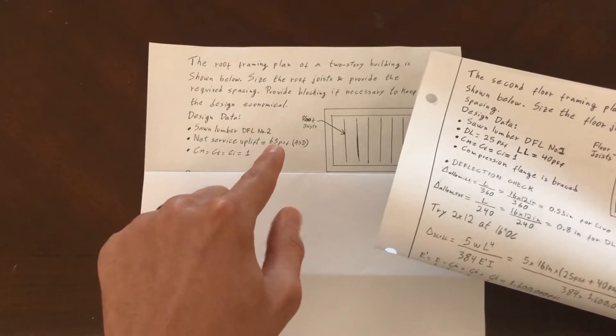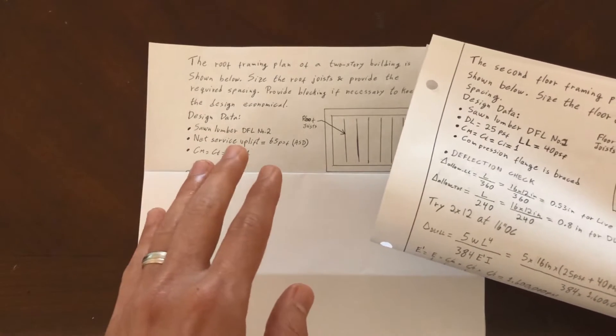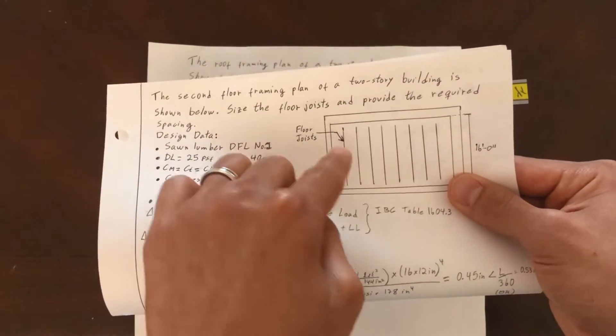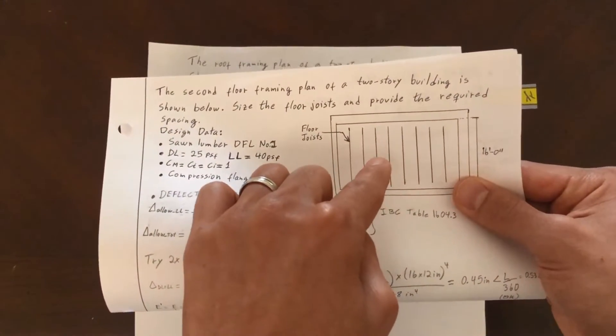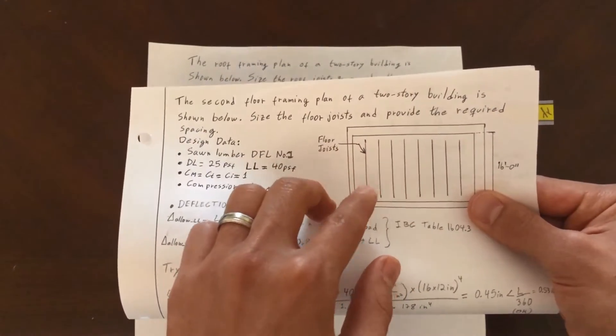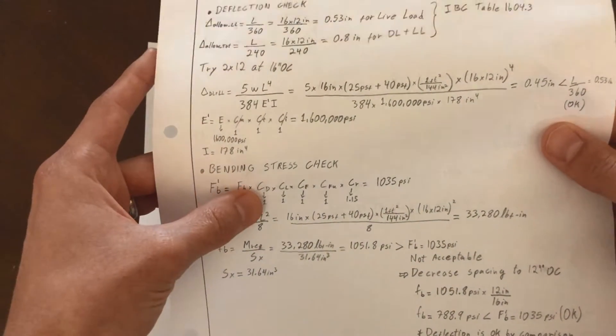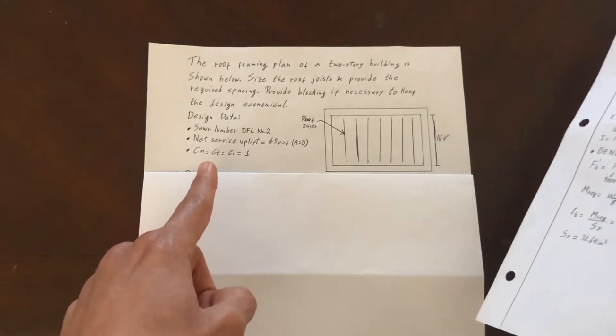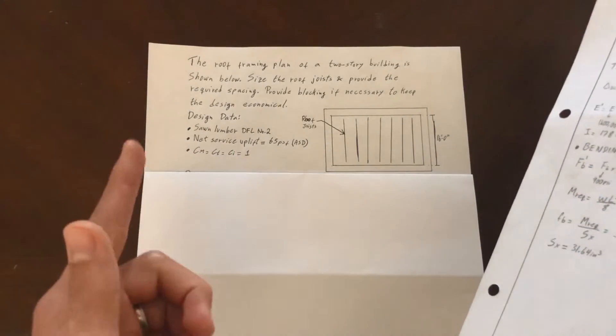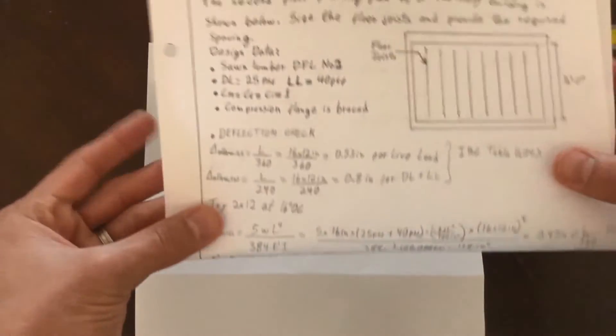Notice here dead plus live is 65 PSF, which is the same as the net service uplift I have here. I did this on purpose for us to see the difference. When you have dead plus live load, the load duration coefficient C sub D is different. In our case it was 1.0 here, but when we have wind load, this will be a different factor - it will increase.